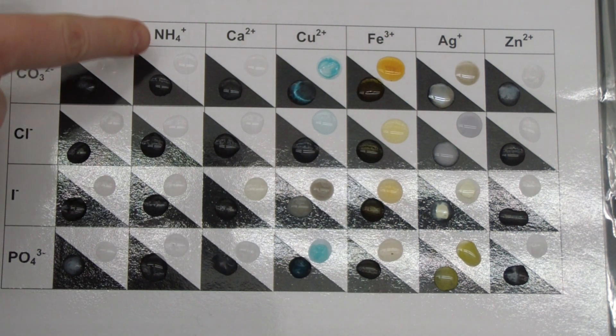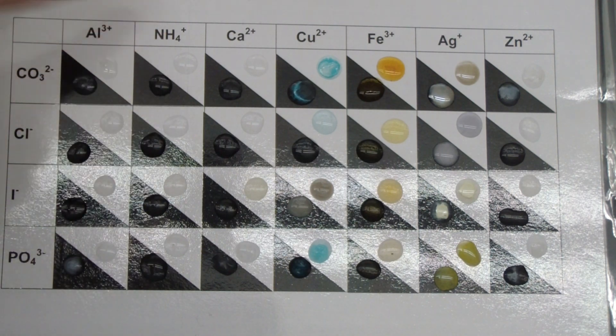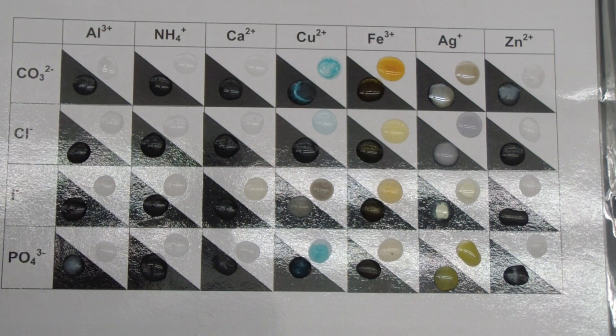Well, first off, for ammonium right here, you can see that there are no precipitates. So it looks like, generally, ammonium is pretty soluble. It will dissolve in water.